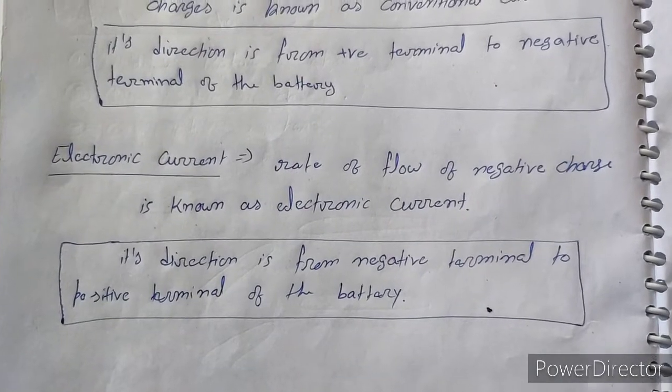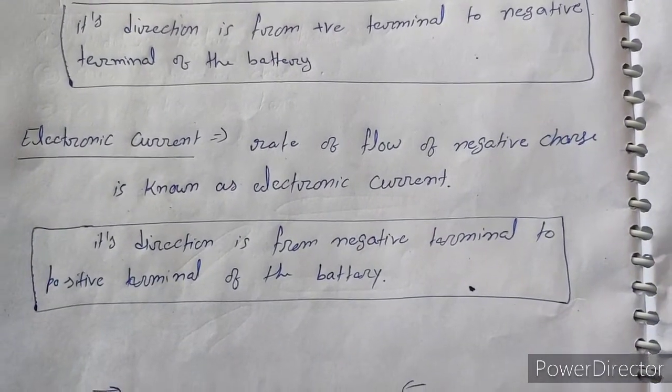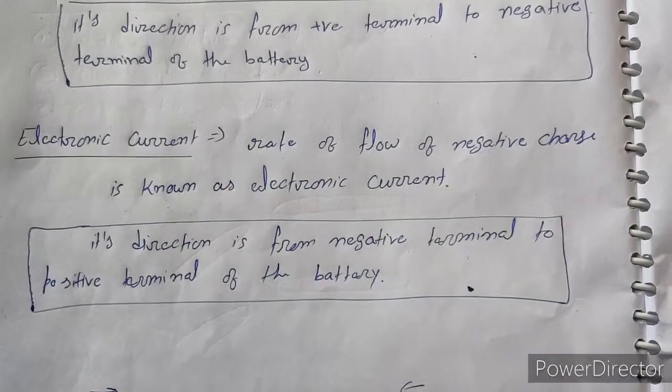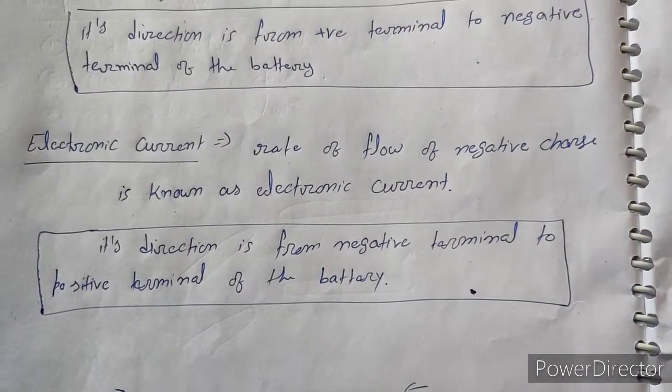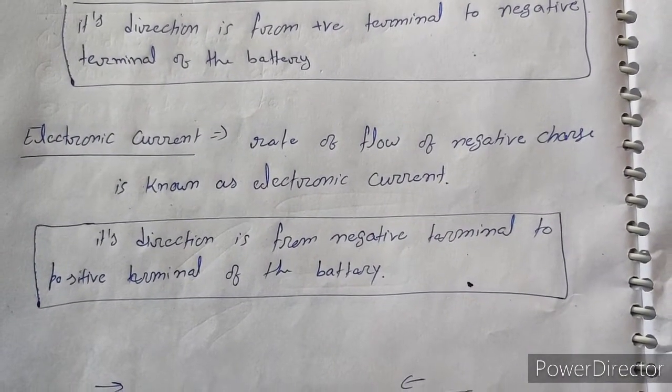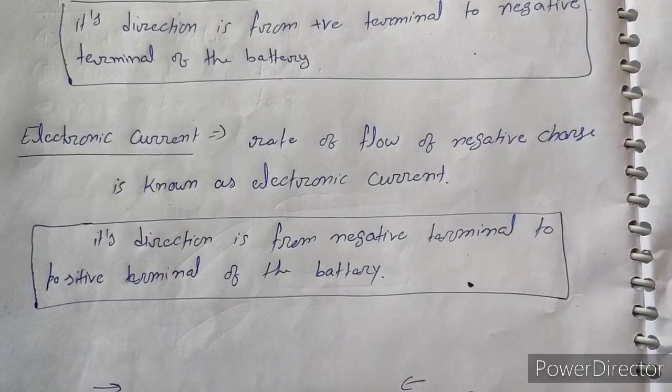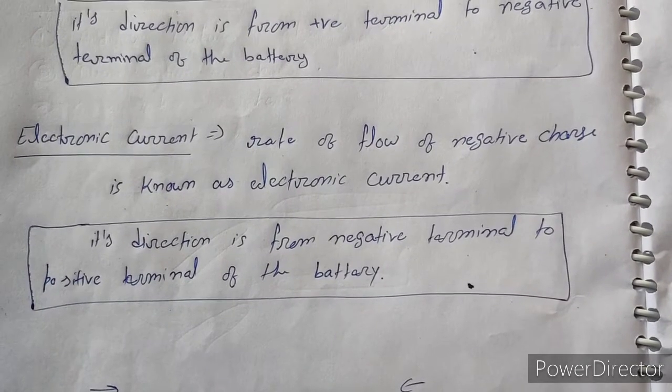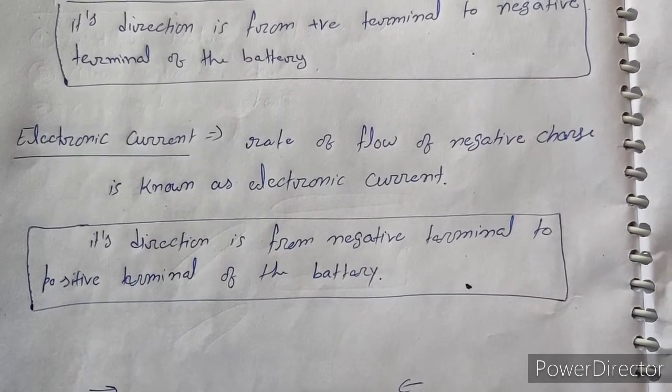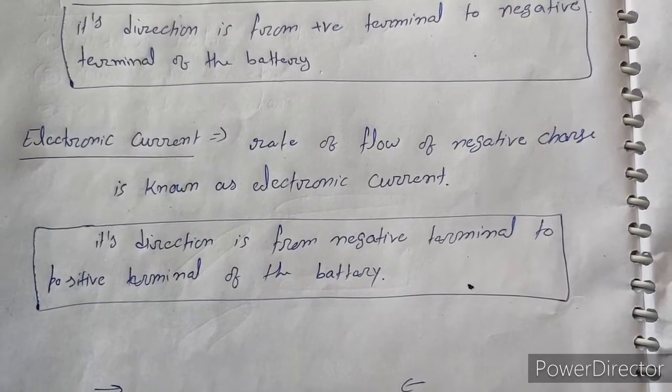But after the discovery of electron, it was found that electric current is constituted due to negatively charged particles — electrons.